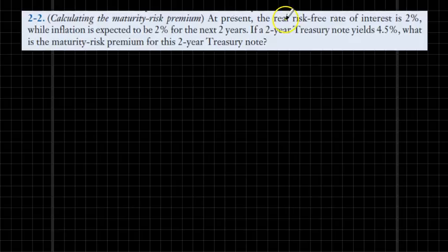We are told about the real risk-free rate, which is currently set at 2%, inflation at 2% for the next two years, and assuming a 2-year Treasury note has a nominal interest rate of 4.5%, what would be the maturity risk premium for that 2-year Treasury note?